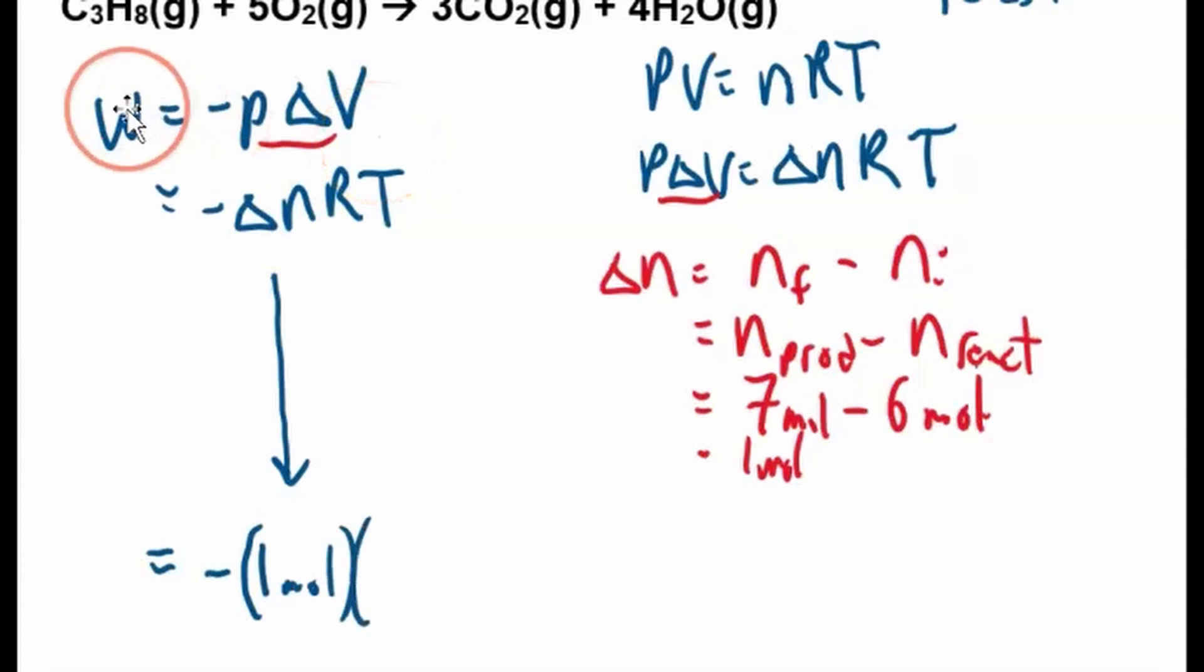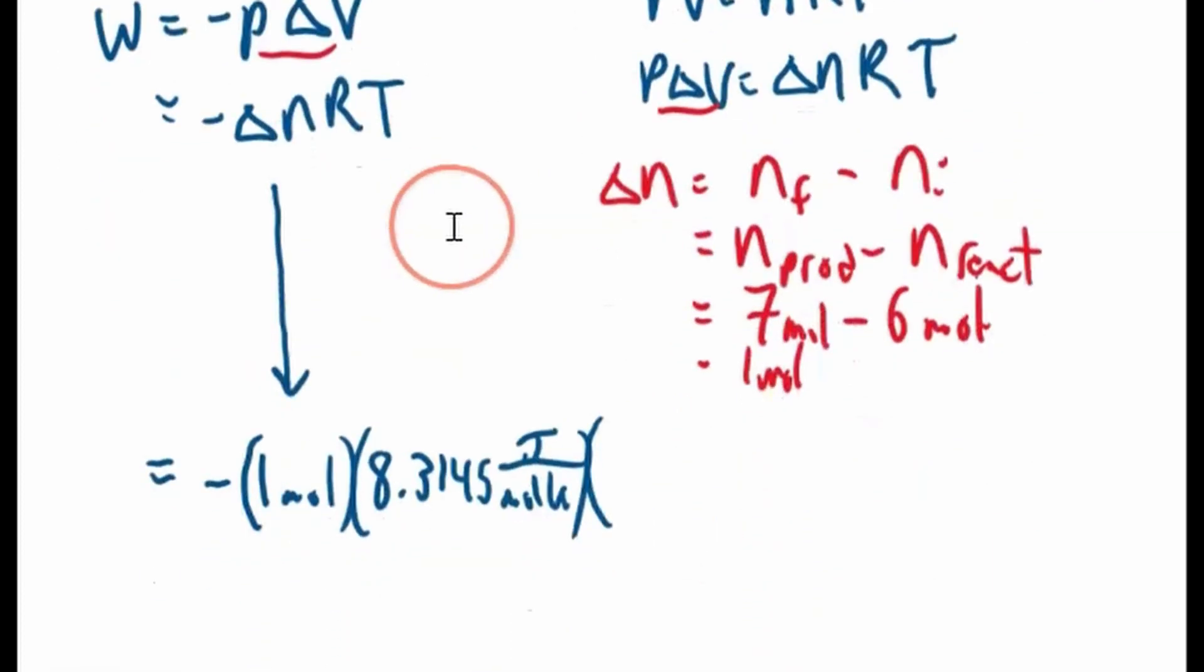And R - now work has to be in joules or kilojoules or something similar. So our R is going to be the one with joules: 8.3145 joules per mole Kelvin. And our temperature is 1200 Kelvin.